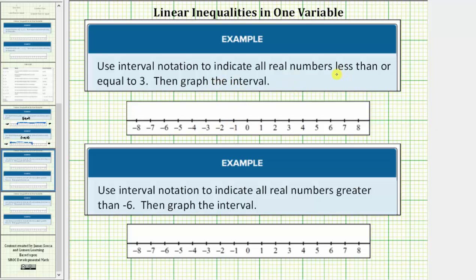So we want to graph all real numbers less than or equal to positive three. Because three is in the interval or part of the solution, we make a closed point or closed circle on positive three. And because it's less than or equal to, we draw an arrow to the left where values are less than three. This is the graph of the interval.